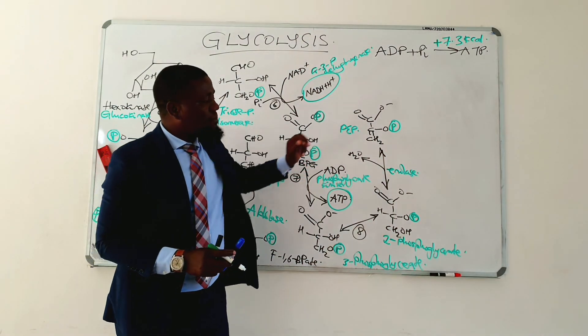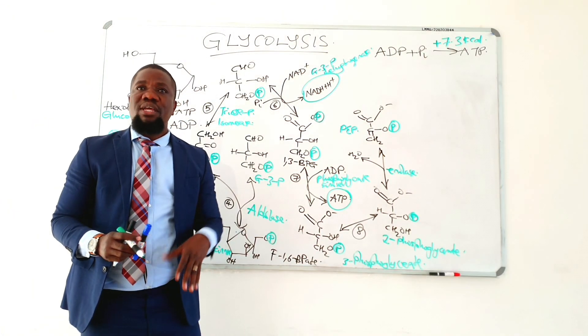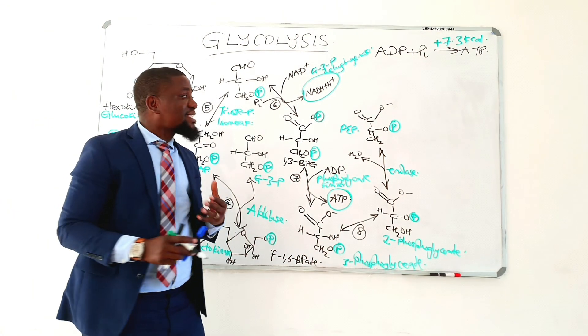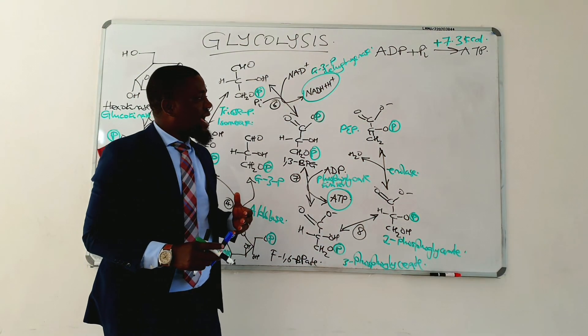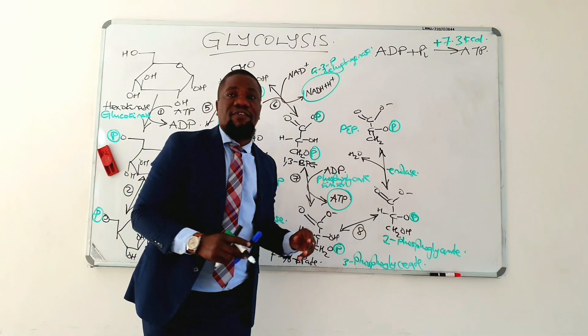The end product is phosphoenolpyruvate (PEP), which, as discussed in the last class, is an example of a high-energy molecule.